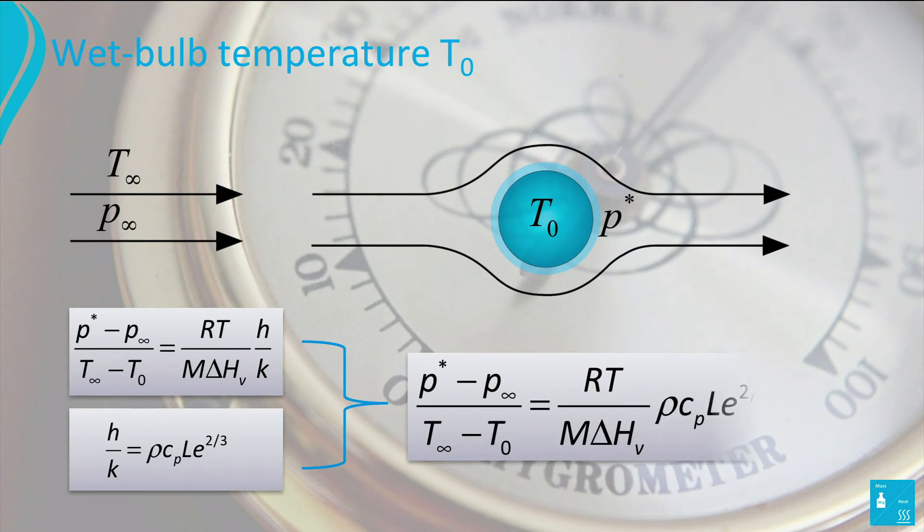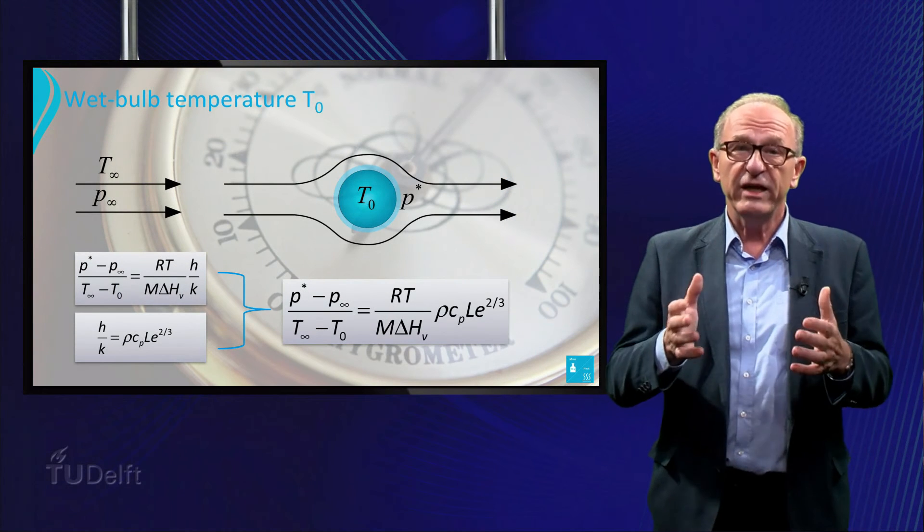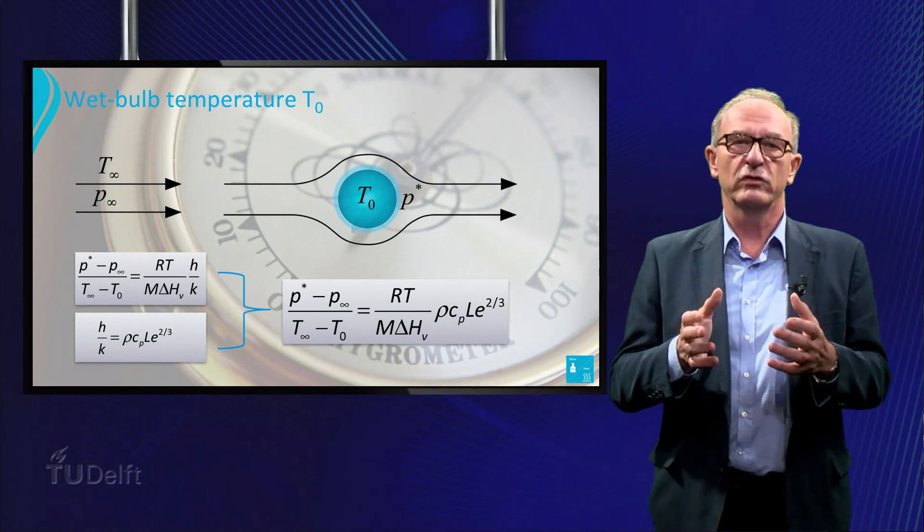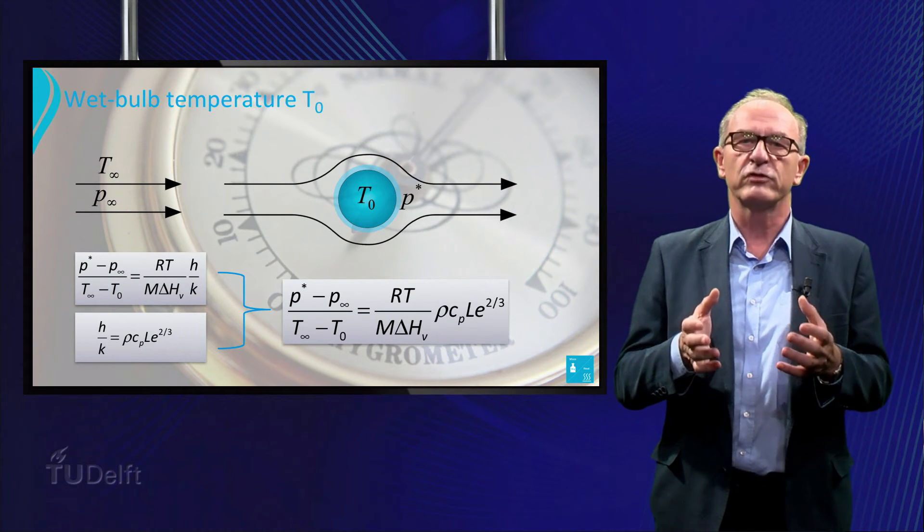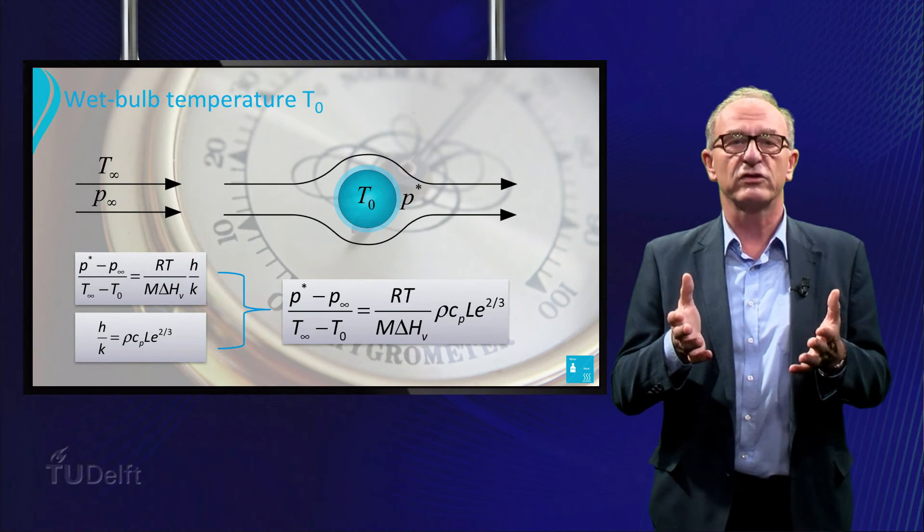Combining this expression with the previous results gives us the following relationship. Actually, this is an equation with two unknown quantities: the wet-bulb temperature T_0 and the vapor pressure P*, which is a function of temperature. Generally, the vapor pressure as a function of temperature is known and can be found in handbooks or scientific literature.